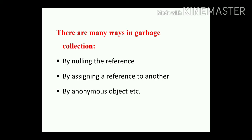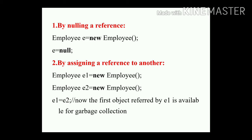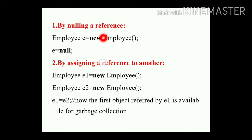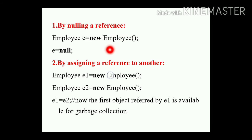The first way is by nulling the reference. Here we declare one object called Employee: Employee e = new Employee(). Then we initialize null to the variable e, meaning the object is now eligible for garbage collection.